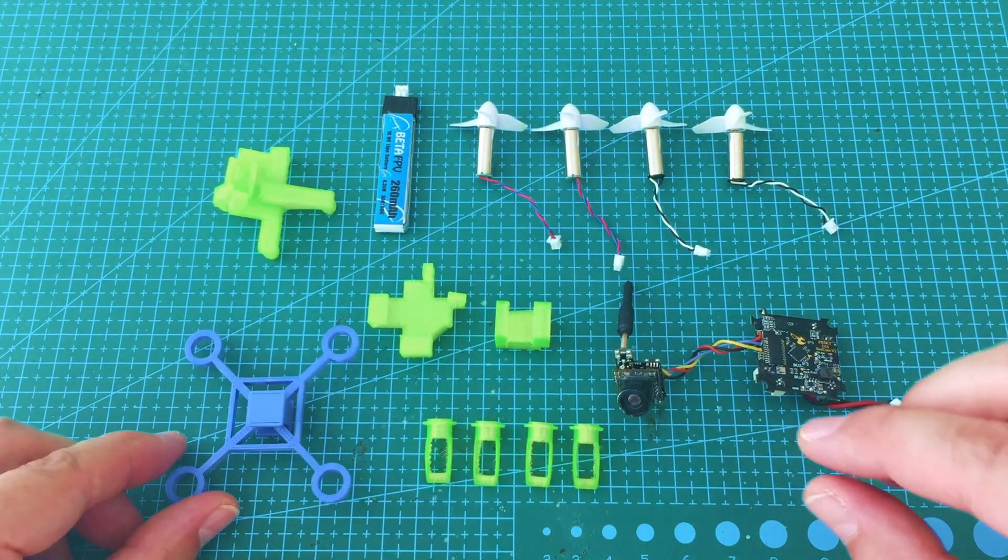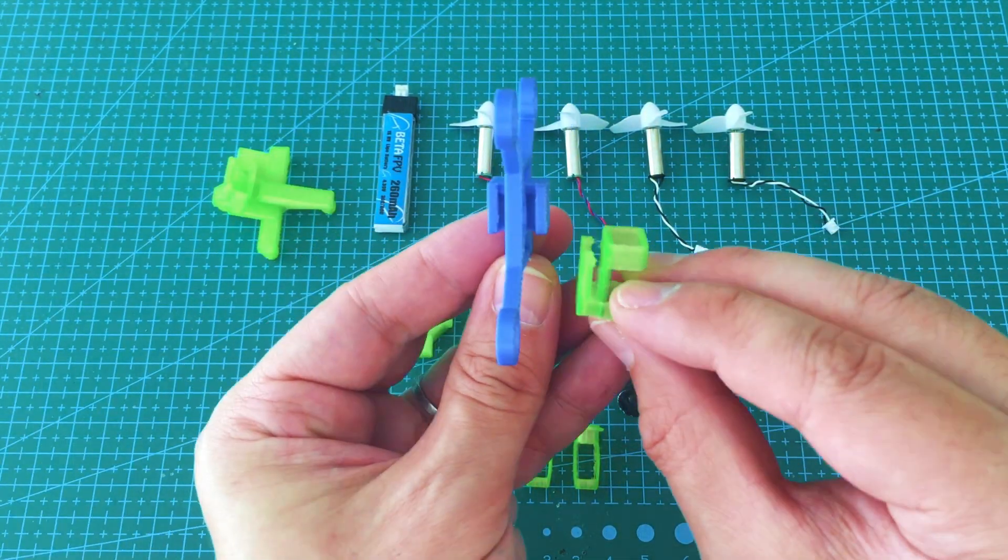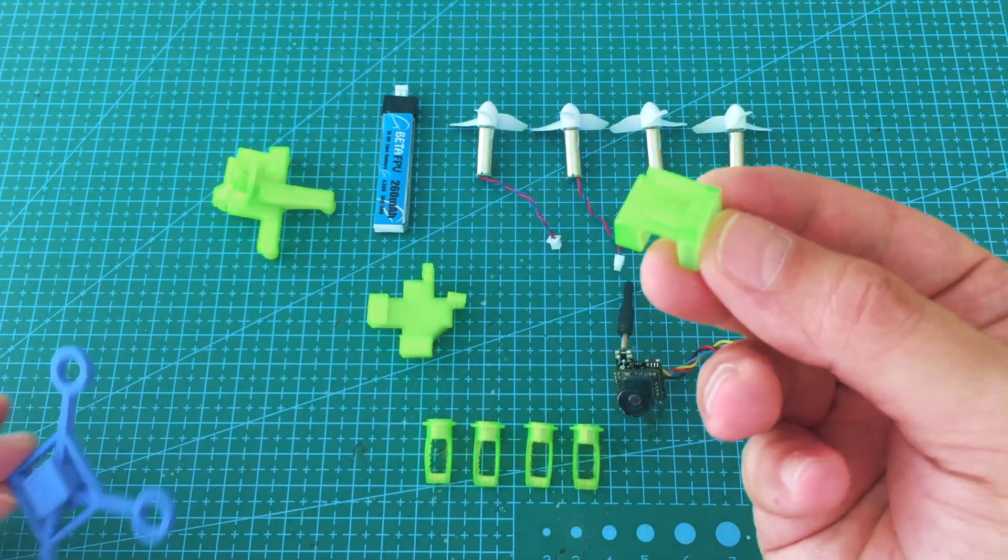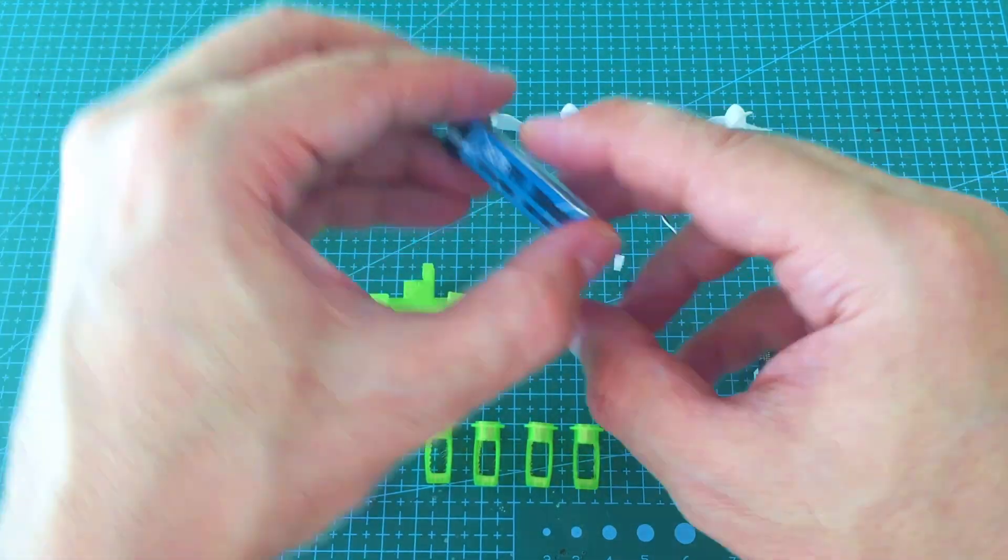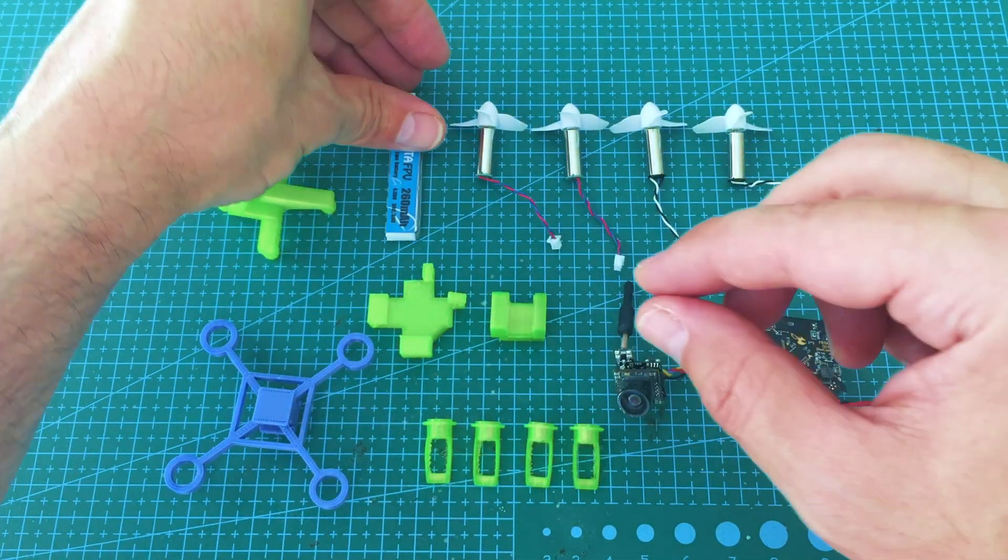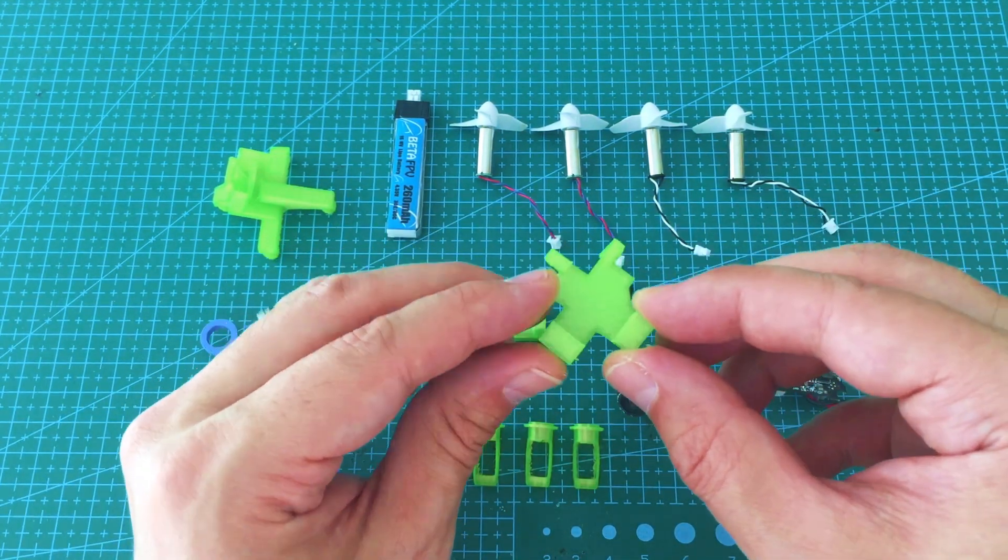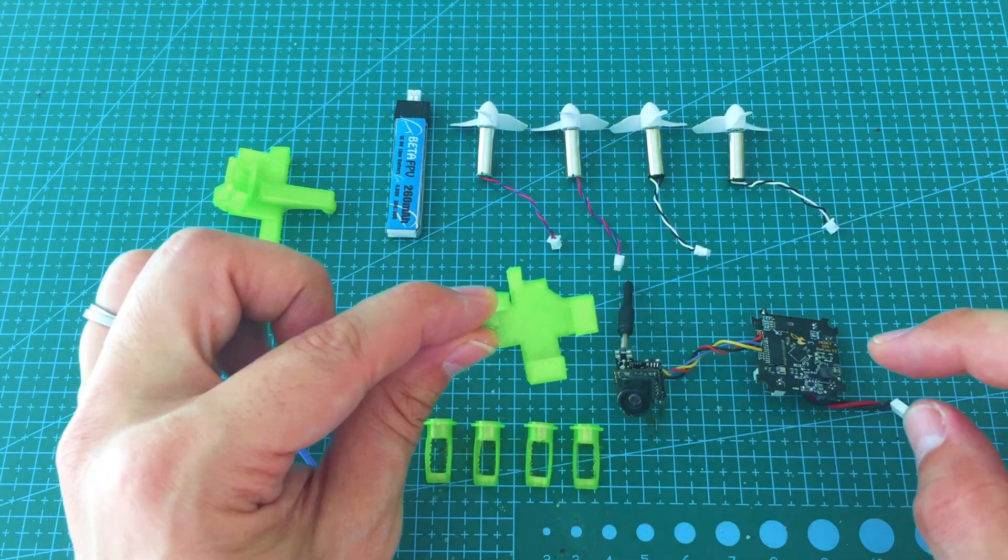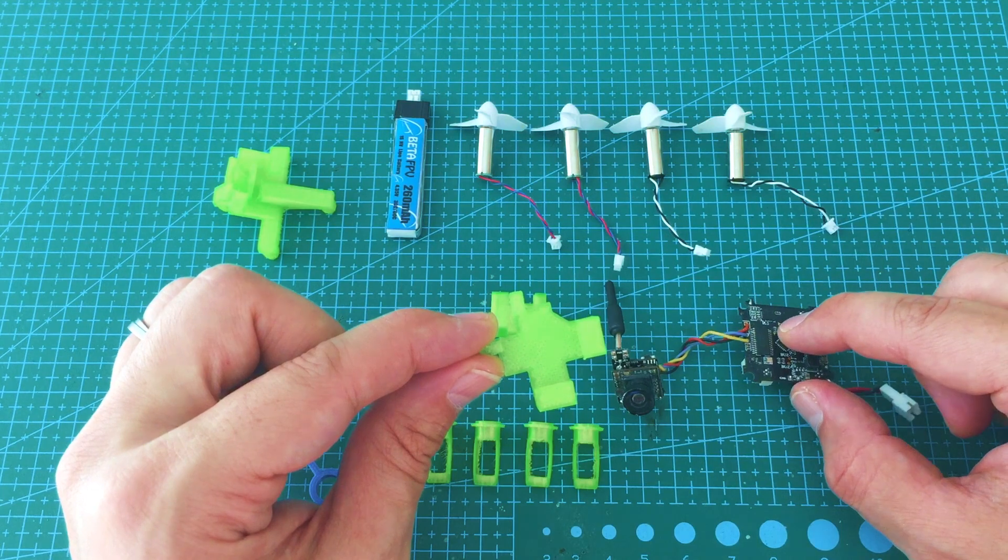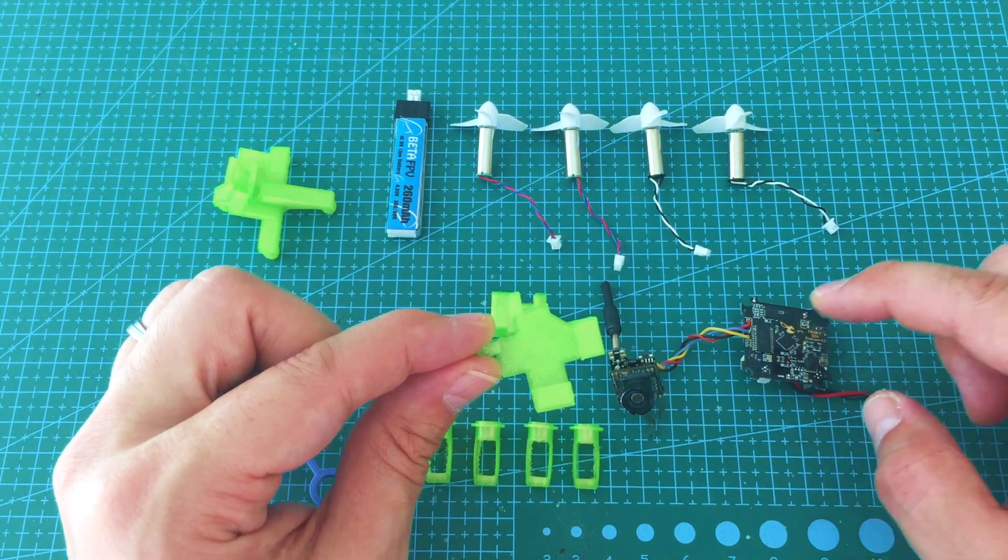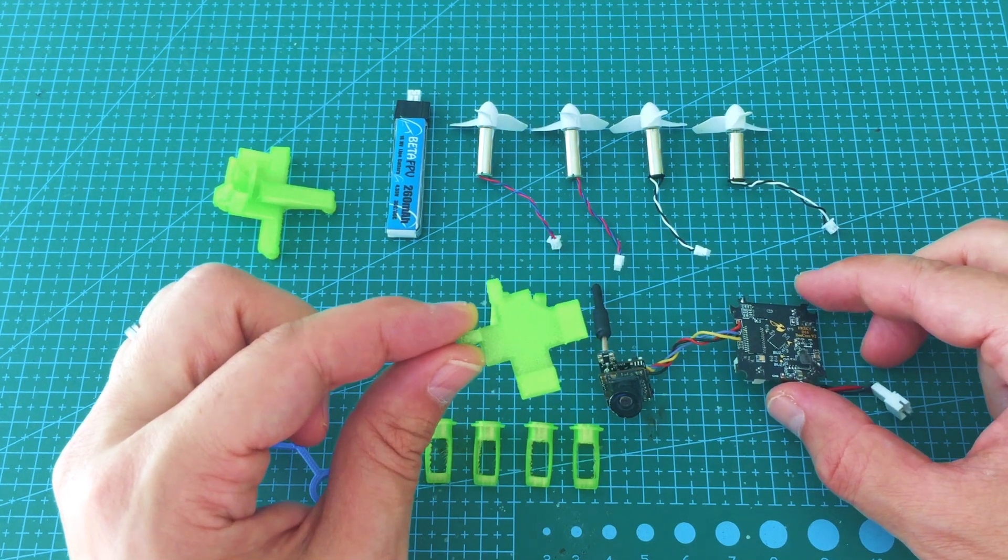So this guy right here goes below. You will insert like this. This is the battery holder. This is designed to hold a 1S LiPo like this one. Then we got this piece here.